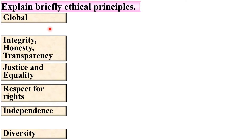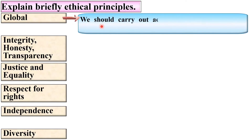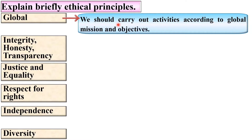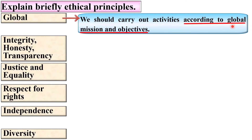Now let us see the meaning of these ethical principles briefly. First one: global. We should carry out activities according to global mission and objectives. We should not think individually but instead think about different activities according to global mission and objectives — that means beneficial to the global.